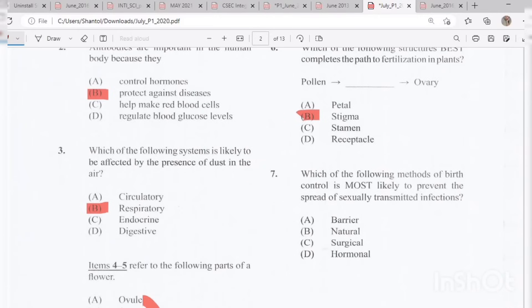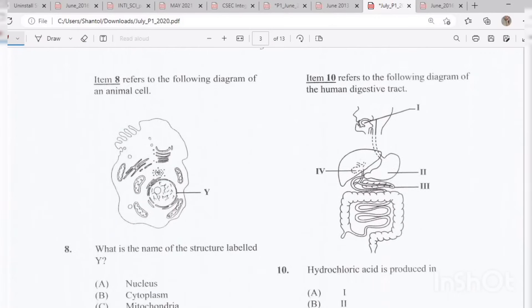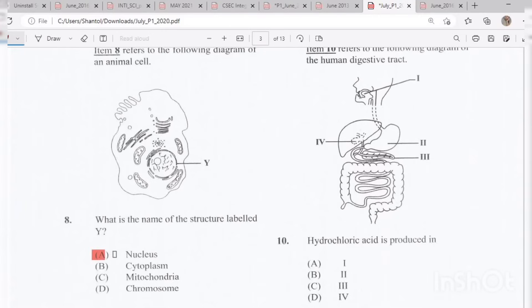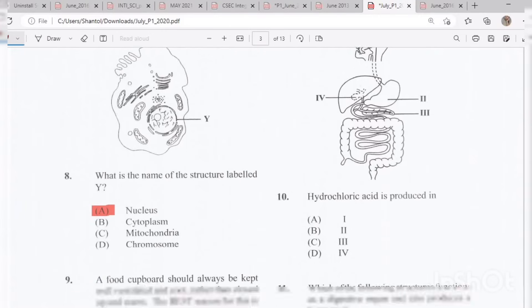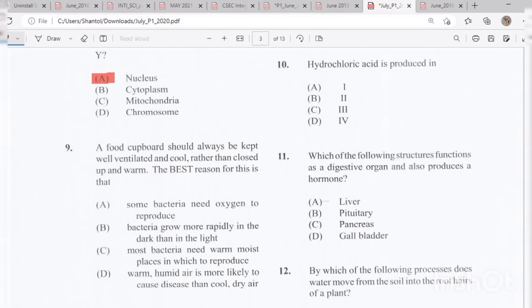Number 7: Which of the following methods of birth control is most likely to prevent the spread of sexually transmitted infections? The answer is A, the barrier method. Question 8: Item 8 refers to the following diagram of an animal cell. What is the name of the structure labeled Y? The answer is A, the nucleus. Question 9: A food cupboard should always be kept well ventilated and cool rather than closed up and warm. The best reason for this is that C, most bacteria need warm, moist places in which to reproduce.